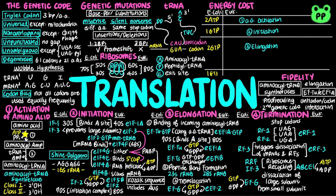For eukaryotes, activation of amino acids also requires 2 ATP. Initiation requires 2 GTPs and 1 ATP. The GTPs are hydrolyzed by eukaryotic initiation factor 2 and eukaryotic initiation factor 5B, which promote the dissociation of other initiation factors. The ATP is spent by EIF4A, which is the RNA helicase that is part of EIF4F, removing secondary structure in mRNA to permit binding to the 40S subunit. Two GTPs are spent during elongation by eukaryotic elongation factor 1A, which binds incoming aminoacyl tRNA to the ribosome, as well as eukaryotic elongation factor 2, which facilitates translocation of the ribosome to the next codon.